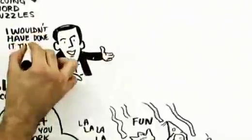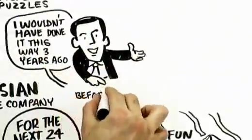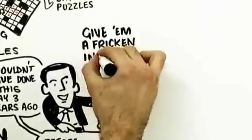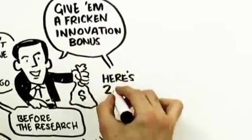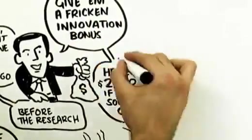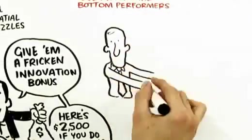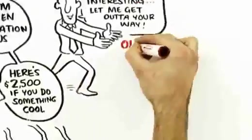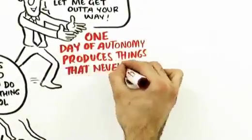Now, this is not an if-then incentive. This is not the sort of thing that I would have done three years ago before I knew this research. I would have said, you want people to be creative and innovative? Give them a freaking innovation bonus. If you can do something cool, I'll give you $2,500. They're not doing this at all. They're essentially saying, you probably want to do something interesting. Let me just get out of your way. One day of autonomy produces things that have never emerged.